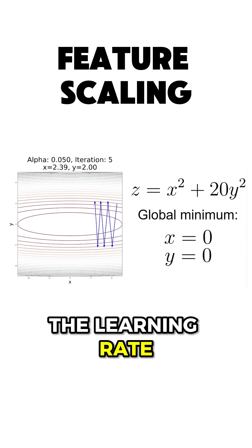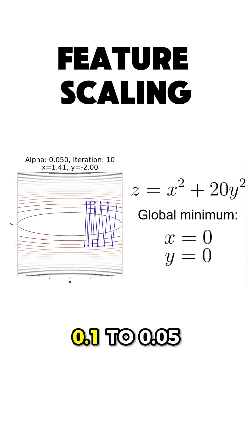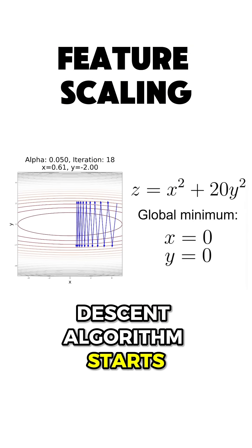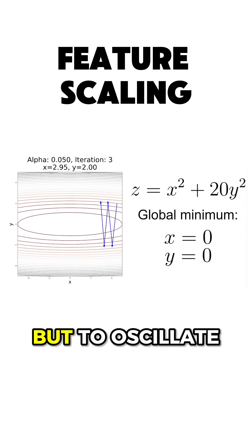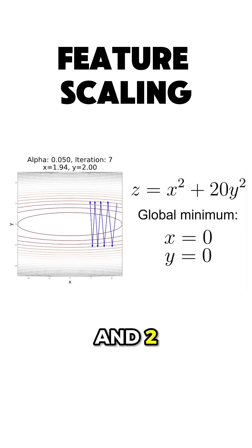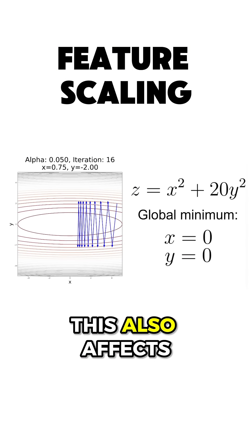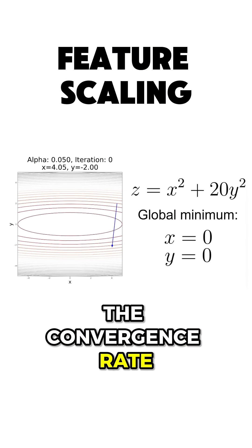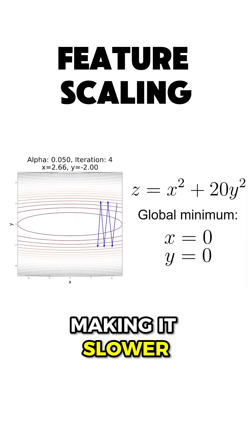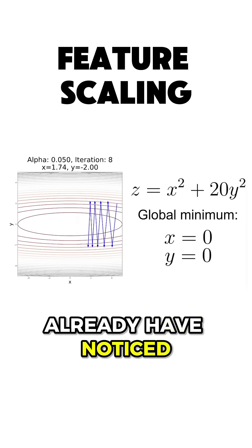And if we start to decrease the learning rate alpha, let's say from 0.1 to 0.05, then the gradient descent algorithm starts not to diverge on the y-axis, but to oscillate between minus 2 and 2, which indeed is an improvement for our algorithm. However, this also affects the convergence rate on the x-axis, making it slower as you might already have noticed.